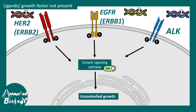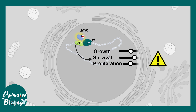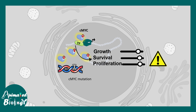Sometimes what happens is not a mutation in function but simply overproduction of the protein. For example, the CMYC gene is upregulated. CMYC normally controls growth, survival, and proliferation by regulating gene expression at the transcriptional level. CMYC mutations often lead to overproduction of CMYC protein — not a mutated version, just more in number. This overproduced CMYC leads to altered tuning of gene expression, causing growth, survival, and proliferation genes to be expressed in higher amounts, which is detrimental and leads to cancer formation.